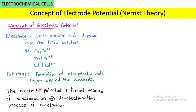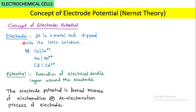The word 'electrode potential' is comprised of two words: electrode and potential. An electrode is a metal rod dipped in its ionic solution — for example, copper in copper(2+) solution. The single vertical line represents that copper metal is in contact with its copper ion solution. Similarly, zinc is in contact with zinc sulfate solution, and cadmium is in contact with cadmium(2+) solution.